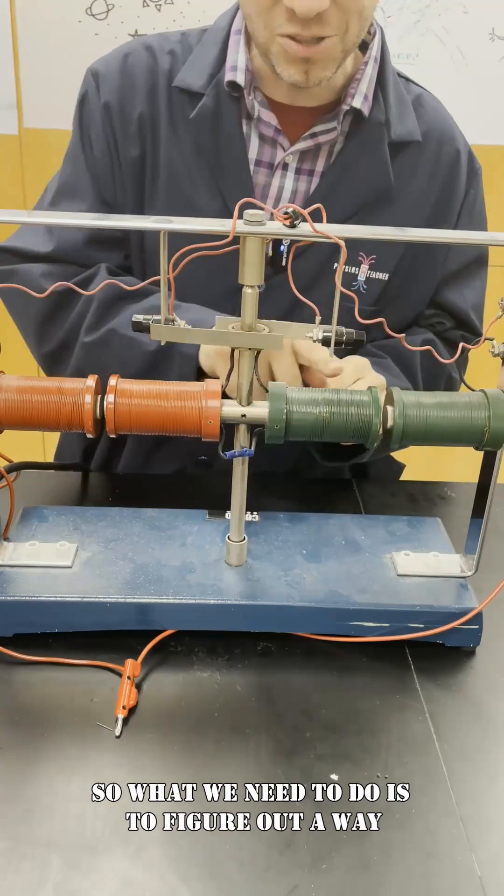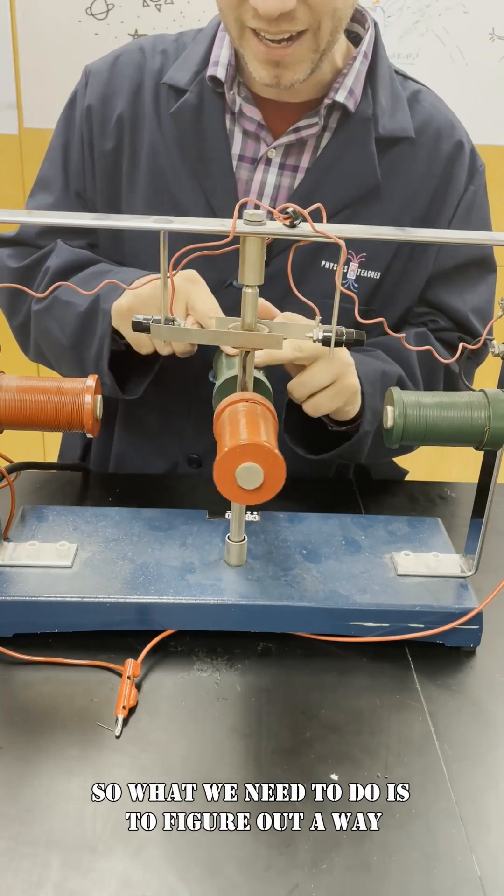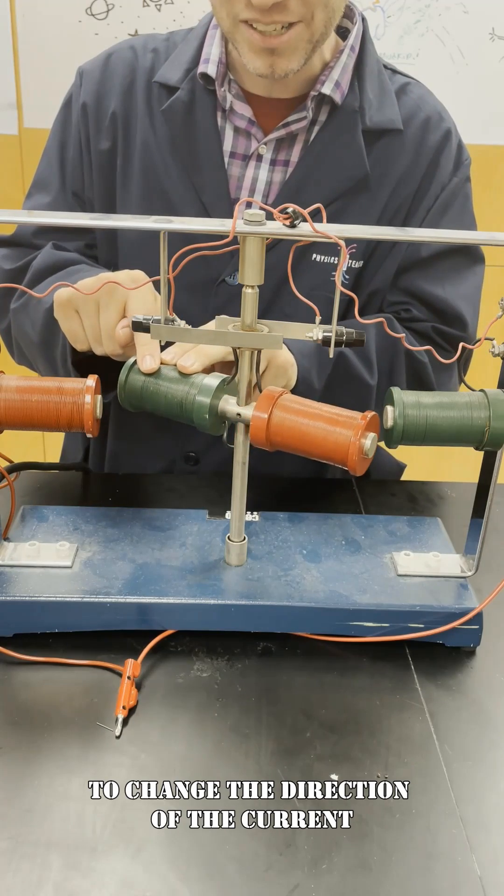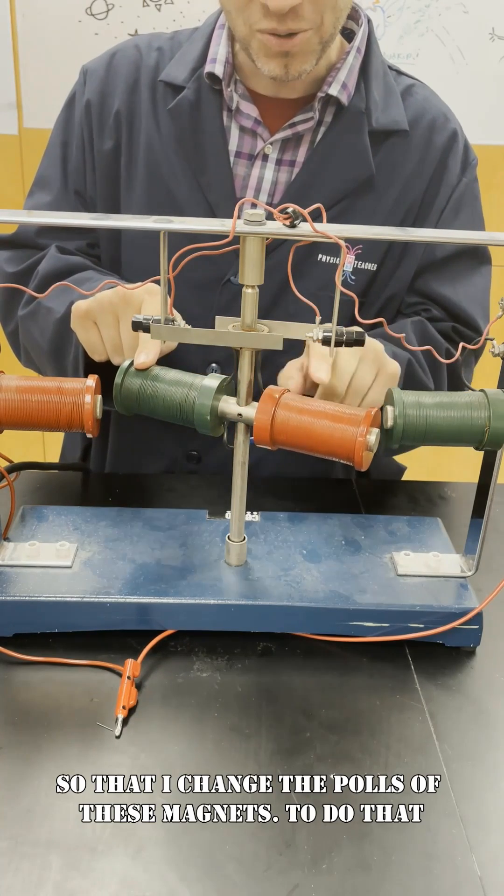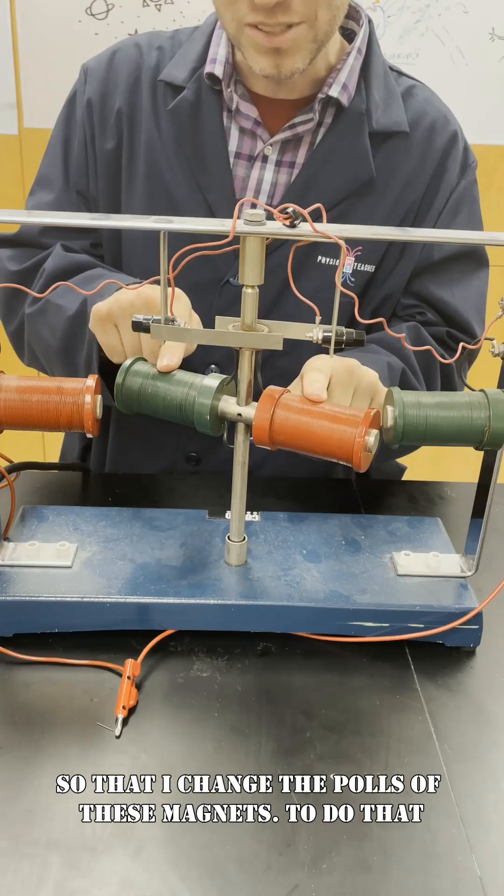So what we need to do is figure out a way to change the direction of the current so that I change the poles of these magnets.